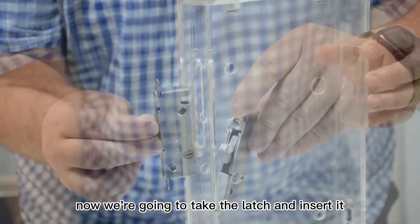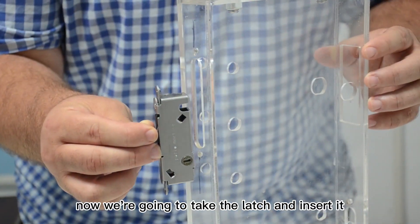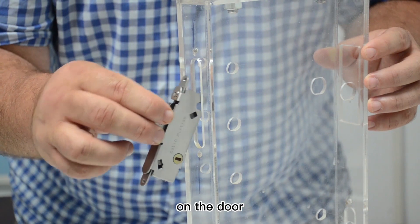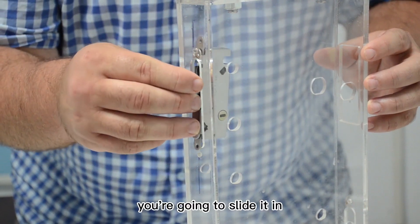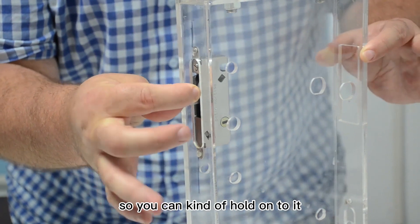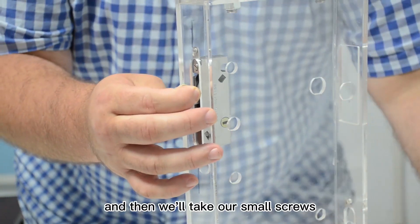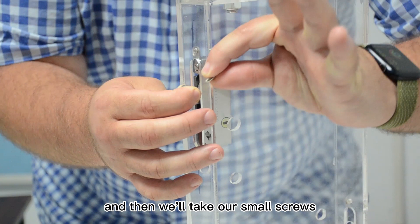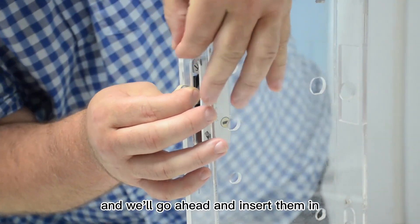When you insert it in the door, we're going to take the latch and insert it into the mortise on the door. Slide it in, and the reason why we have this handle here is so you can kind of hold on to it. Then we'll take our small screws and insert them in.